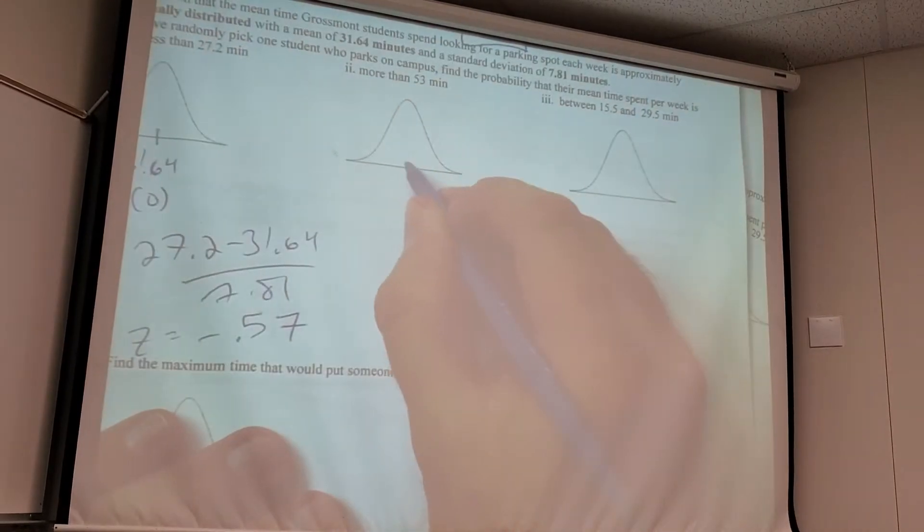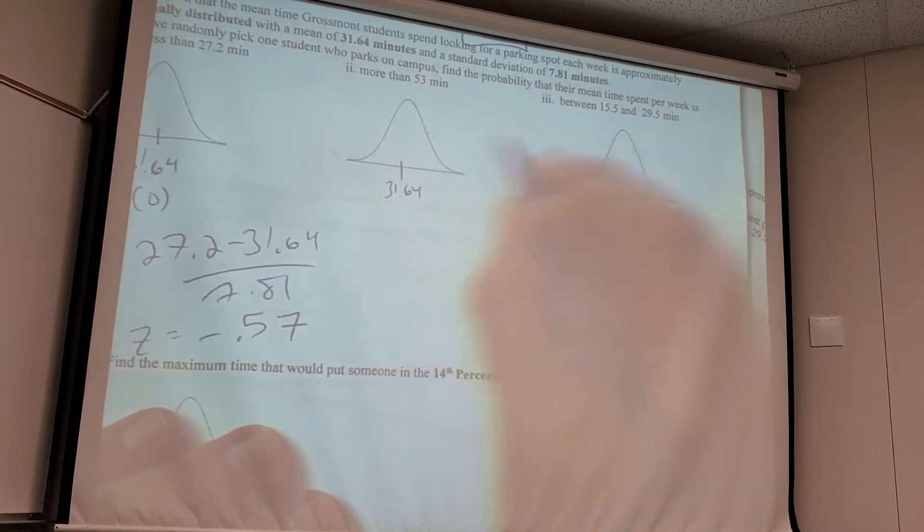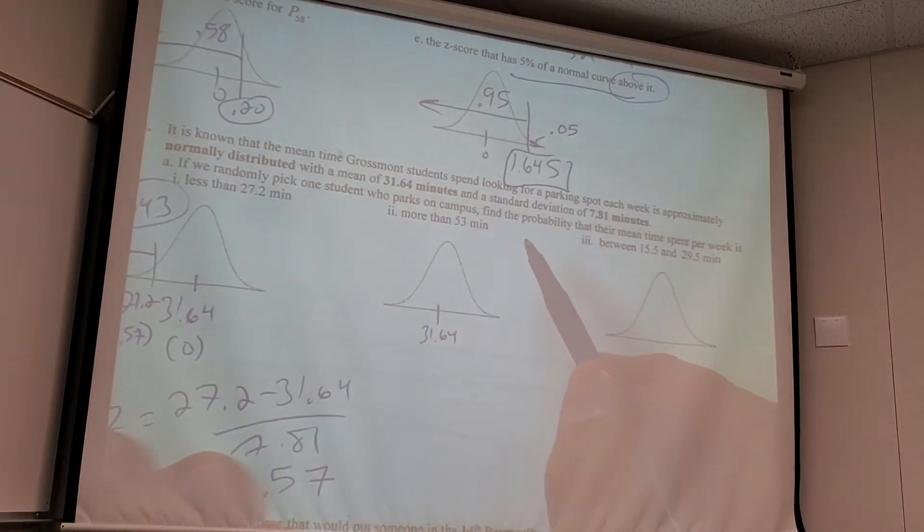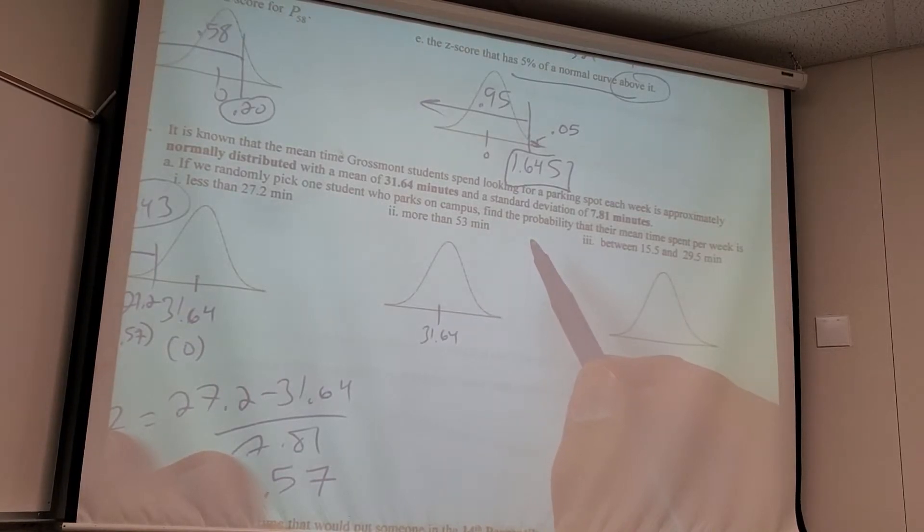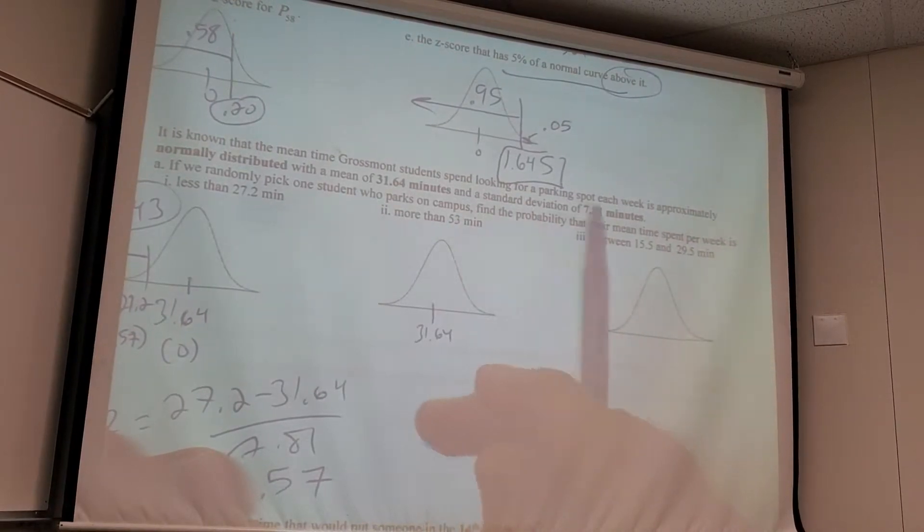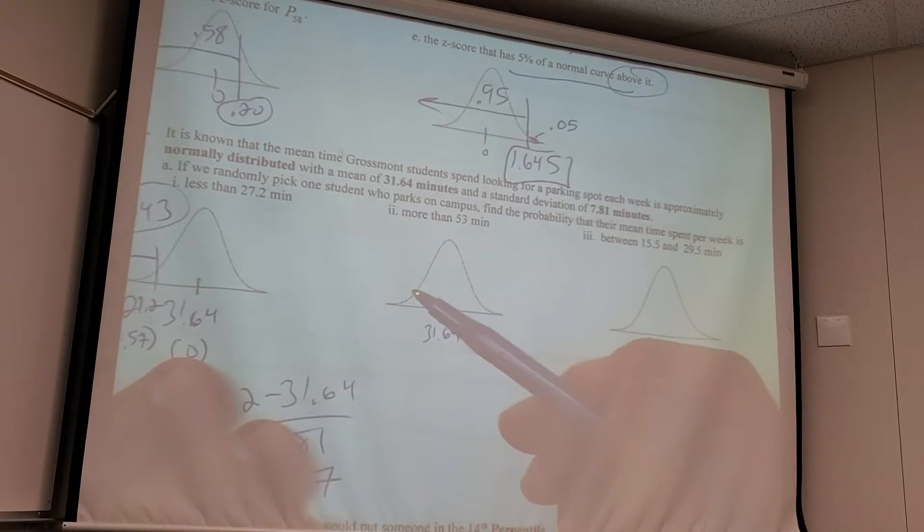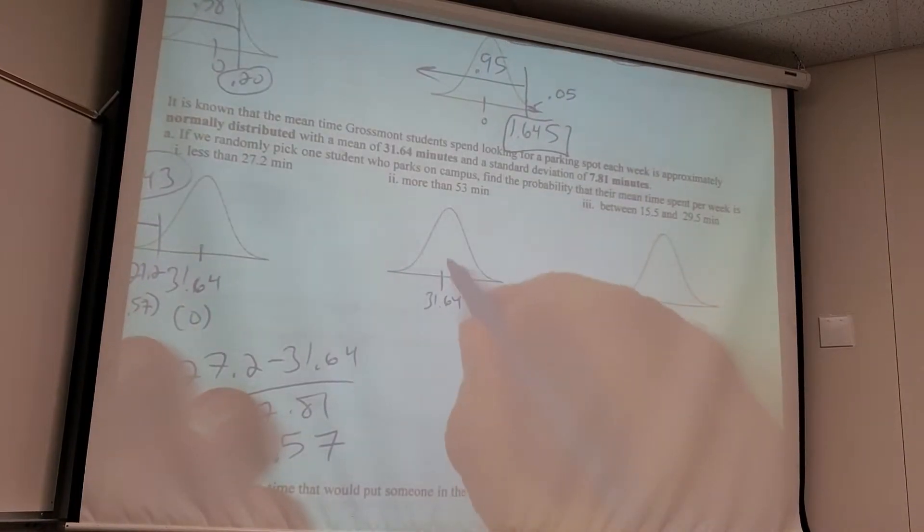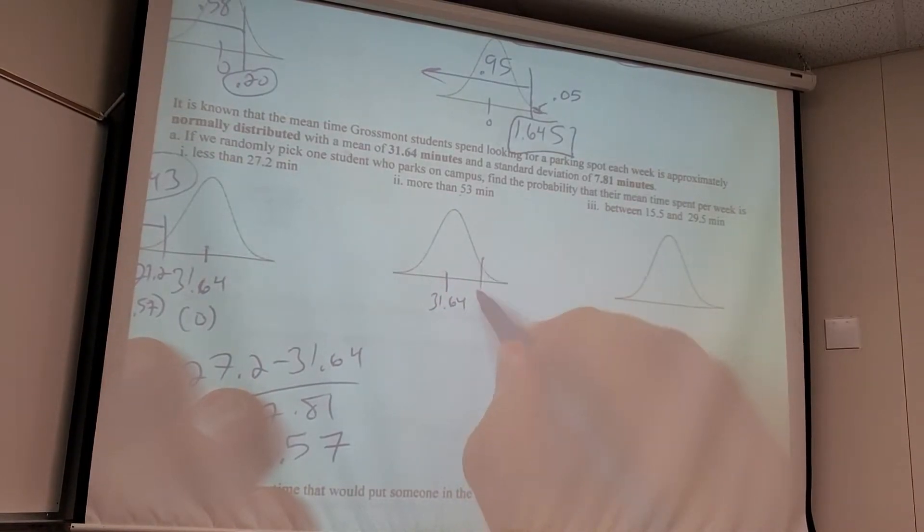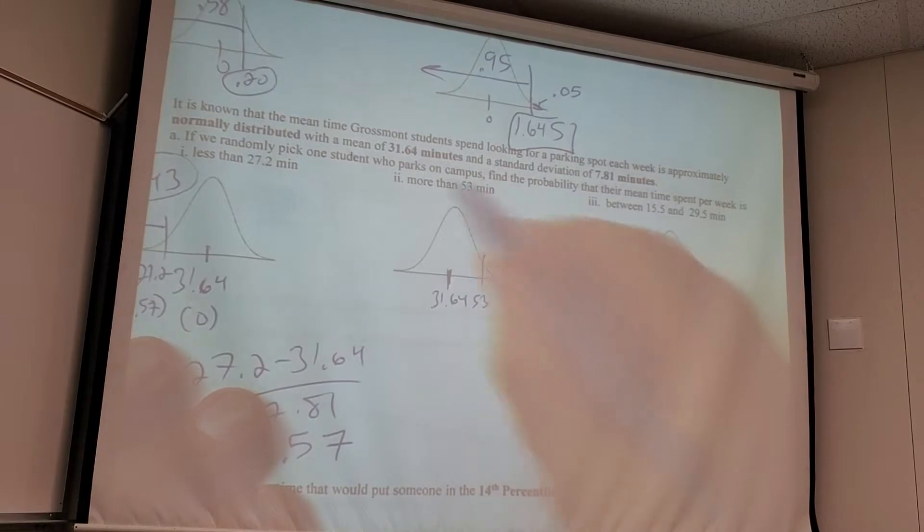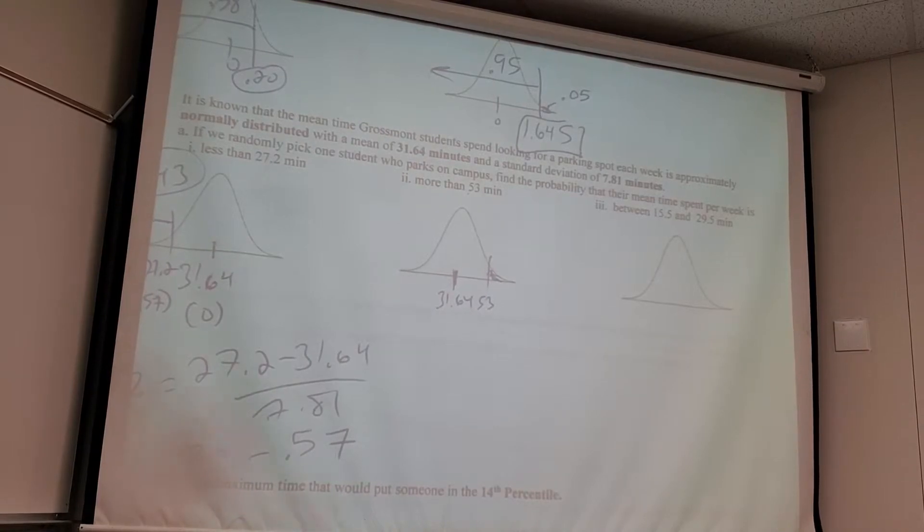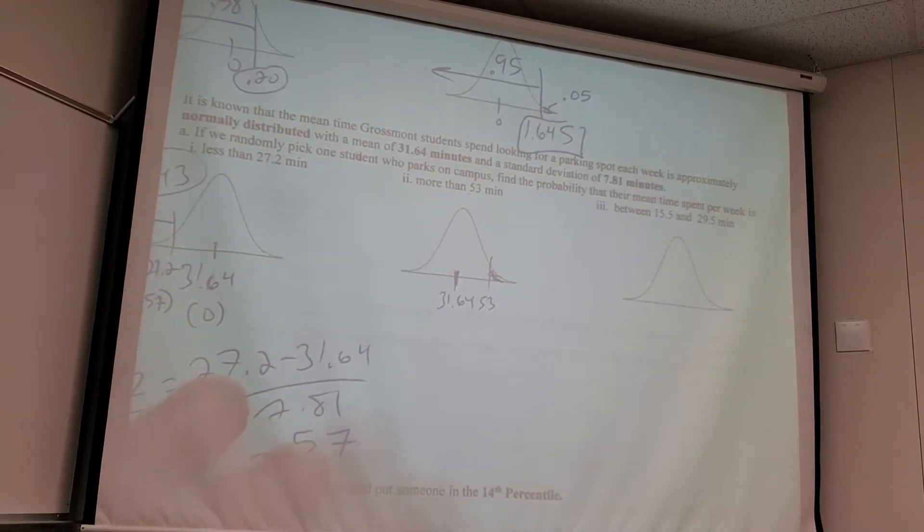So now the question just becomes exactly like this question. What's the probability z is less than negative 0.57? I looked up negative 0.57, you get 0.2843. And then the other two are exactly the same idea. Once you make z-scores, they become just like these two. All right, so more than 53 minutes. I know in the summertime, these numbers are not right. When fall happens, the first few weeks especially, if your first class is at 10, you're screwed. So where does 53 go? Obviously, way the hell up here. It's not like this in the middle. And then I want more than that. So already I know the answer should be kind of a smaller percentage. Definitely less than 50%.